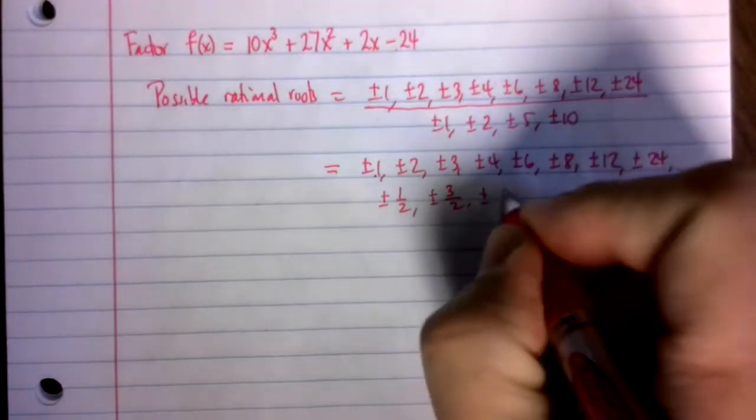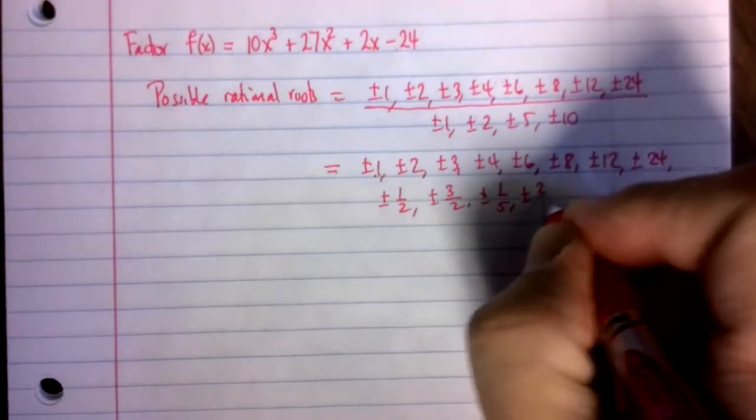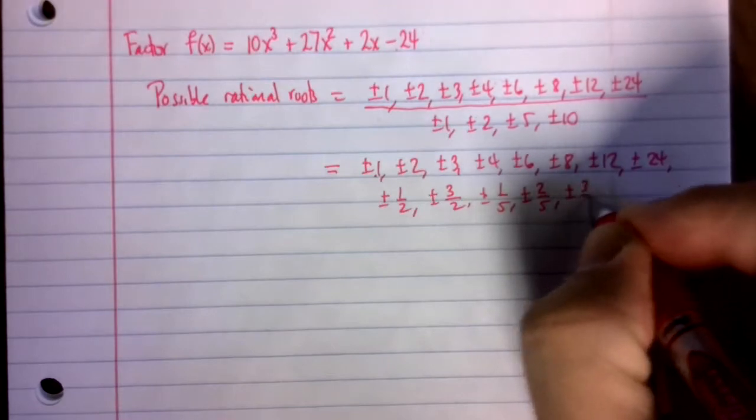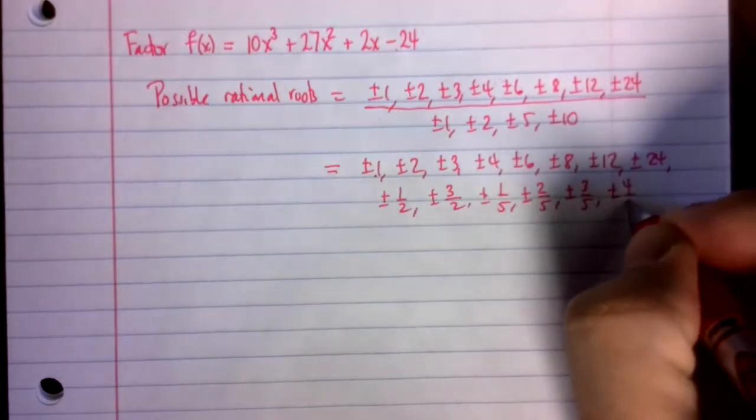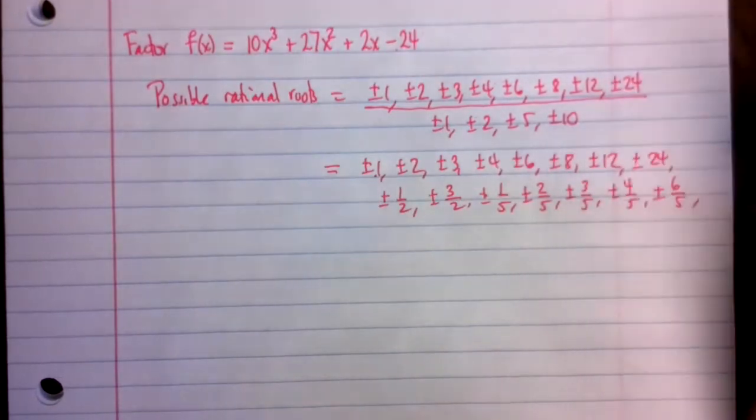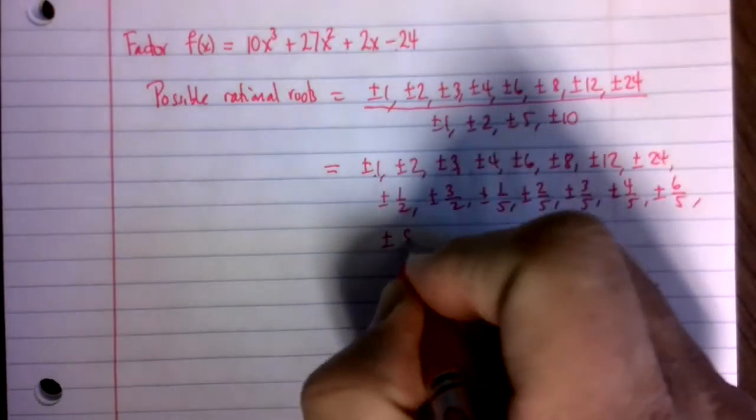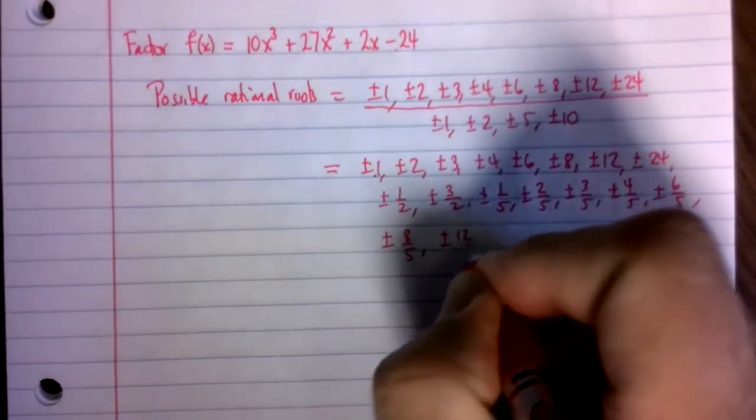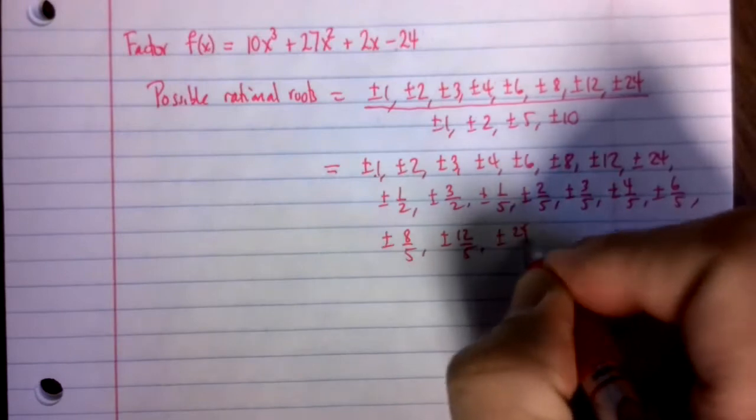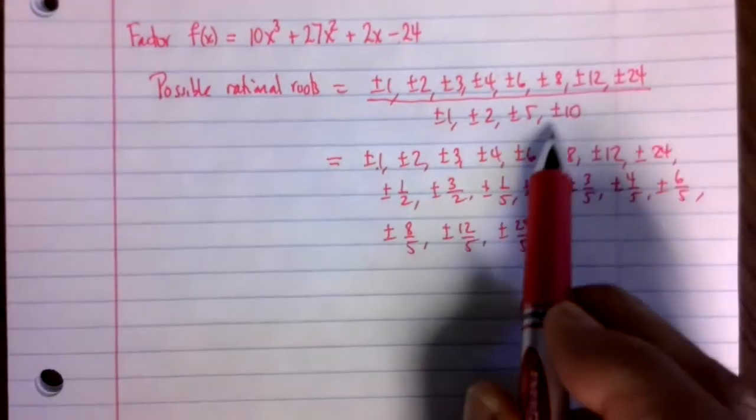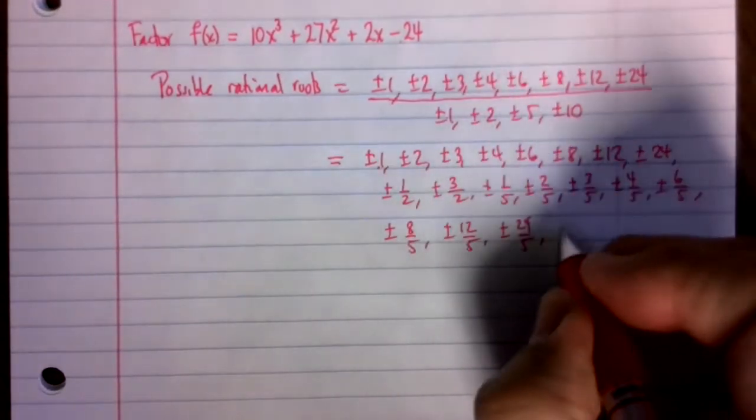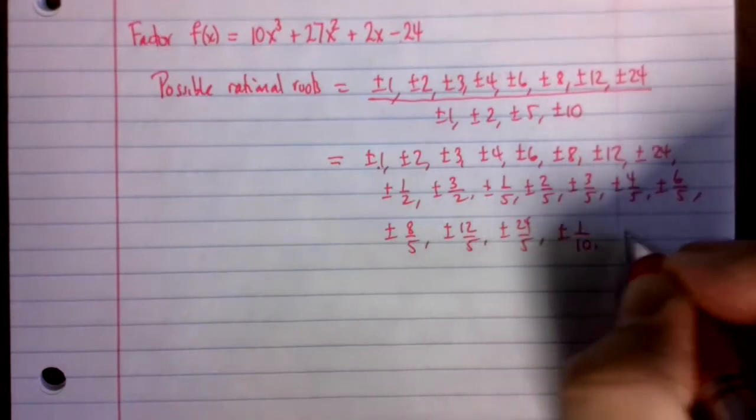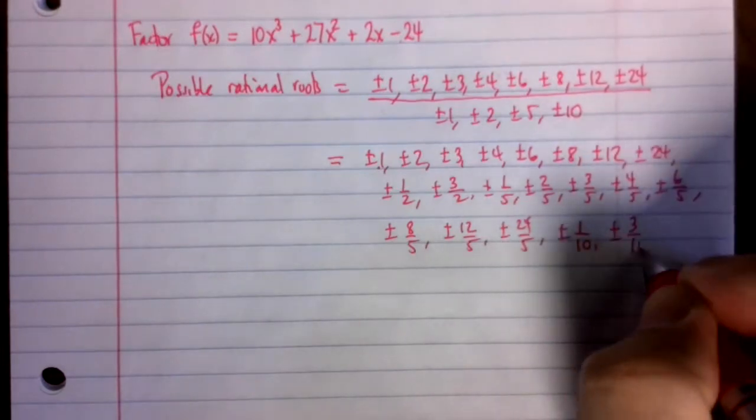Divide by 5, I get a brand new list. Plus or minus a fifth, plus or minus 2 fifths, plus or minus 3 fifths, plus or minus 4 fifths, plus or minus 6 fifths, plus or minus 8 fifths, plus or minus 12 fifths, plus or minus 24 fifths. And then finally dividing by 10, I would get two extra possibilities, plus or minus a tenth, and plus or minus 3 tenths. So these are all of the possible rational roots.